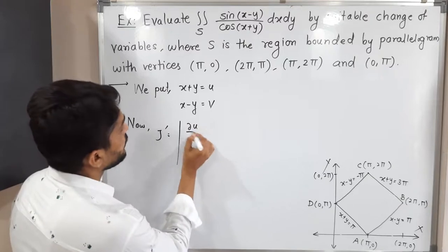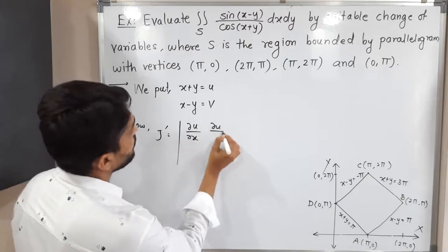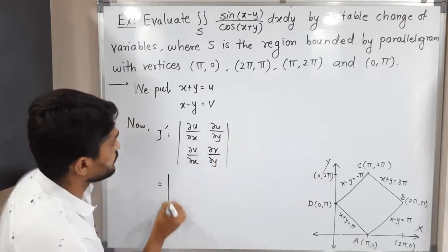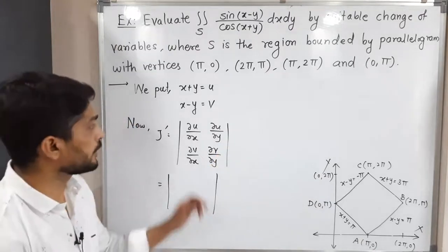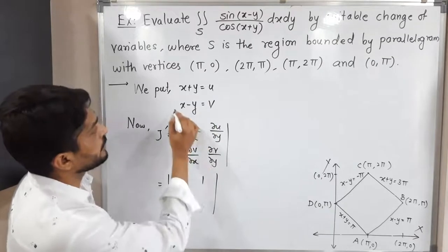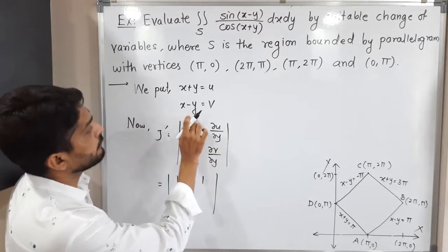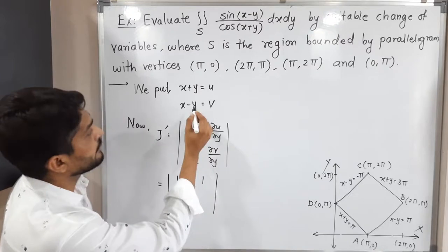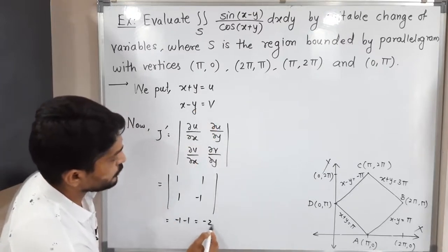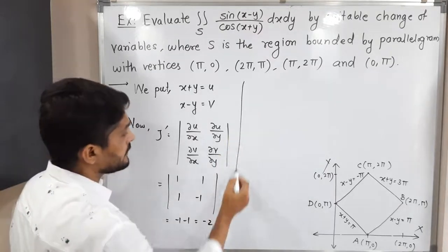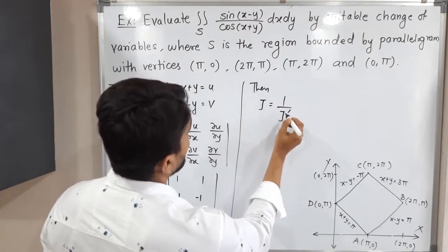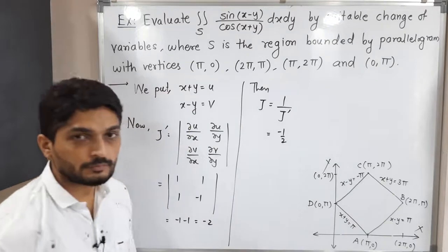J′ is the determinant of the matrix [∂u/∂x, ∂u/∂y; ∂v/∂x, ∂v/∂y] = [1, 1; 1, −1]. So J′ = (1)(−1) − (1)(1) = −1 − 1 = −2. Therefore J = 1/J′ = −1/2.